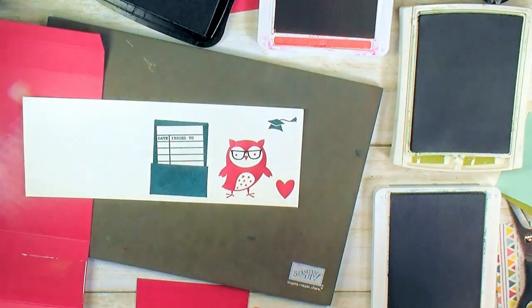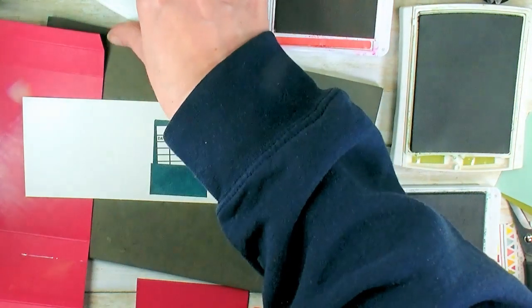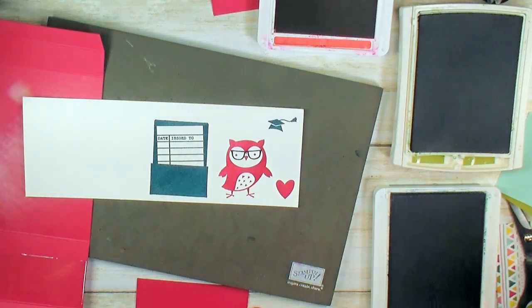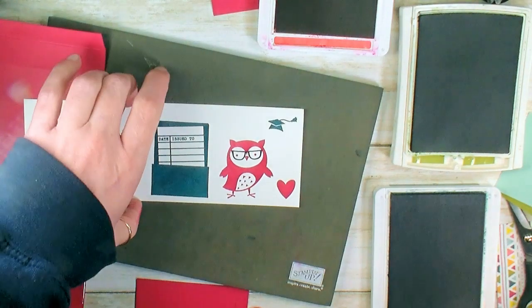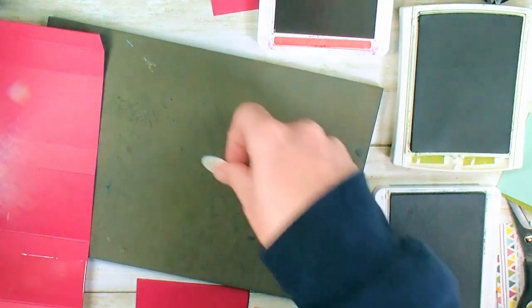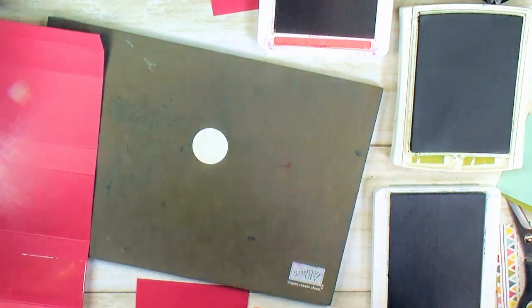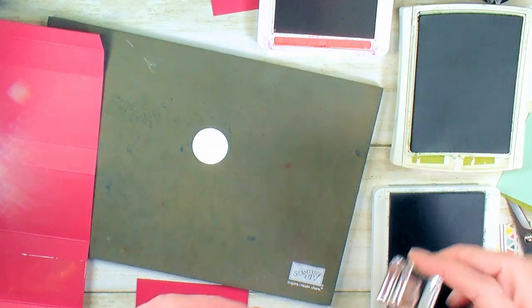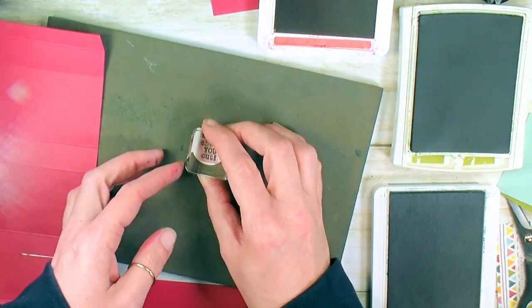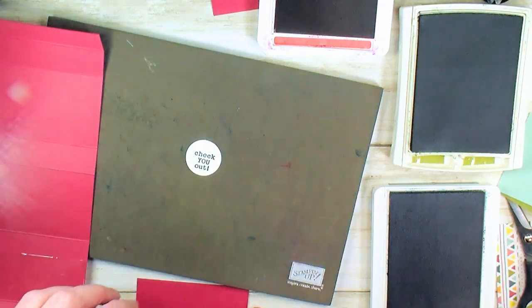There's still a couple of little things that we need to stamp. So since we've got the ink pads all out, let's slide aside our scrap of Whisper White. Then I've got a one-inch circle. I did that with a retired one-inch circle punch. Unfortunately, that one is sold out. Check You Out and Pretty Peacock. We're going to stamp it low of center on our one-inch circle.